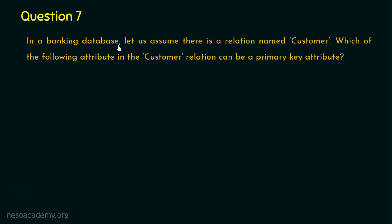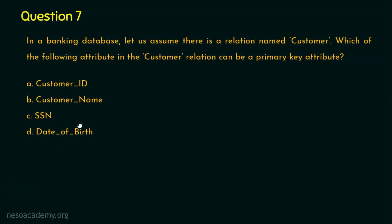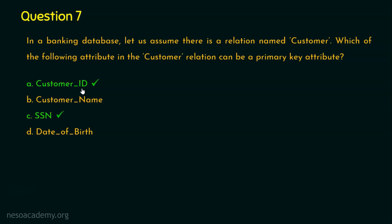The last question: in a banking database, assume there is a relation named customer. Which attribute in the customer relation can be a primary key? Option A: customer ID. Option B: customer name. Option C: SSN (social security number). Option D: date of birth. The answers are customer ID and social security number, because many customers can share the same name or date of birth. Customer ID and SSN are unique and not null — every customer should have a customer ID, and every customer in the US has a social security number. I hope you enjoyed this rapid-fire quiz.